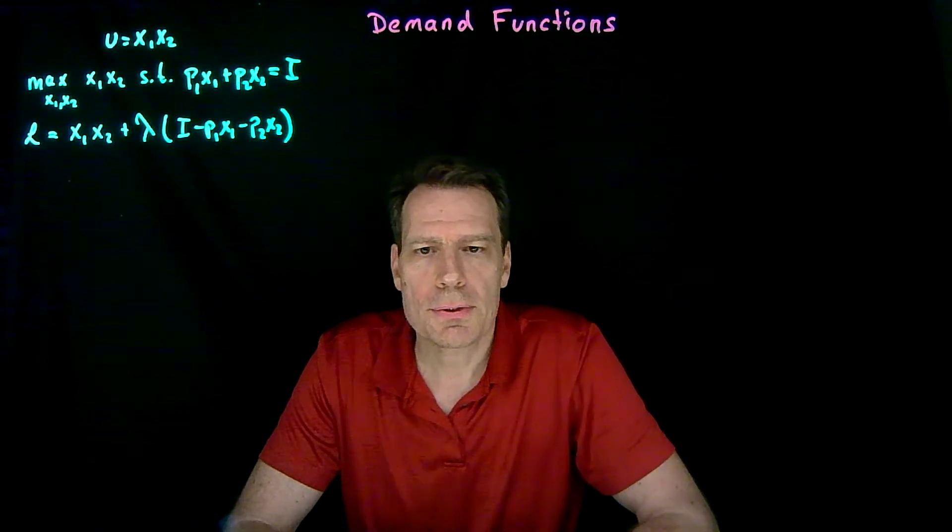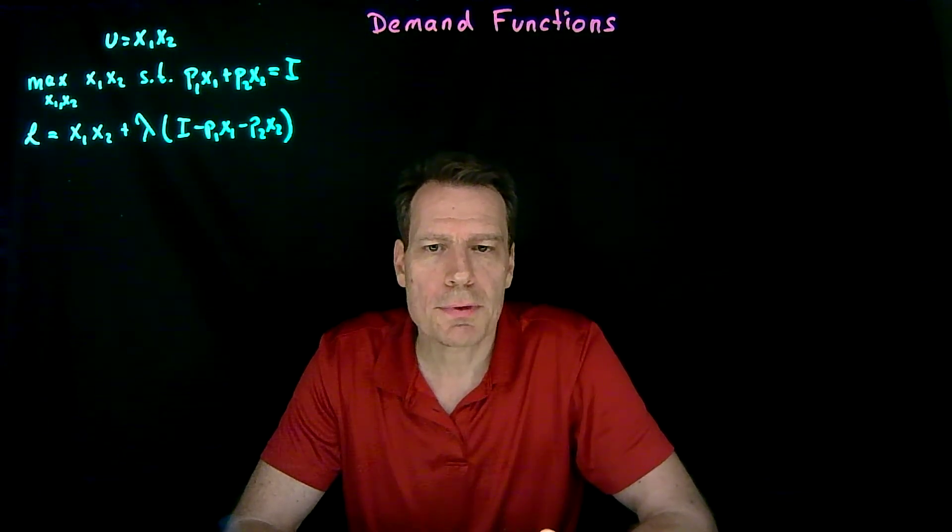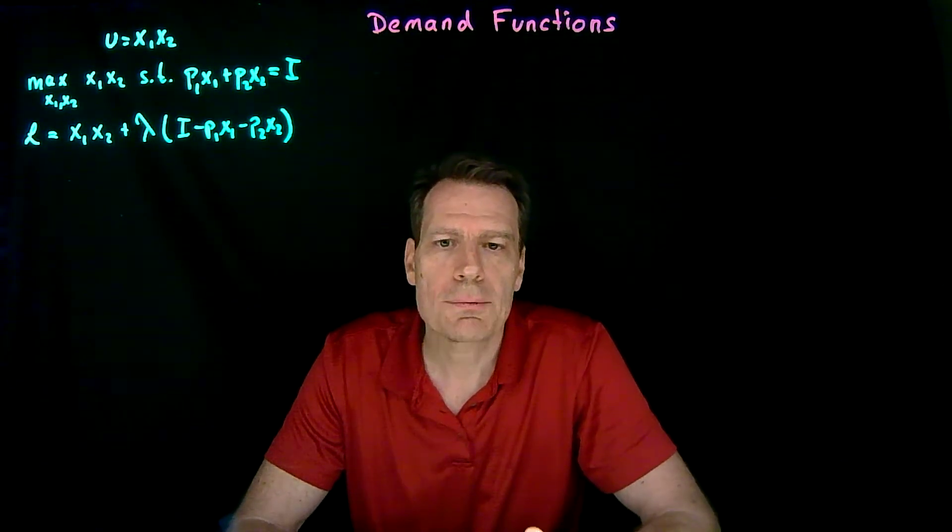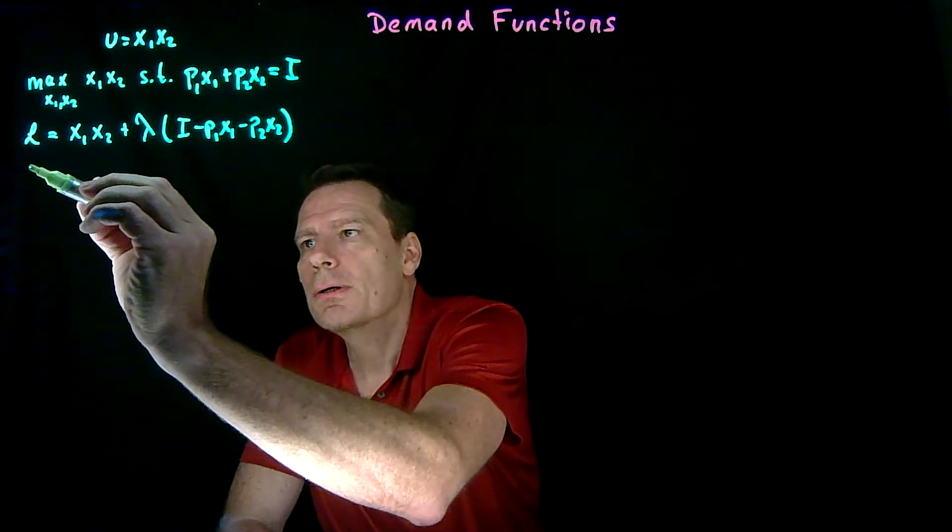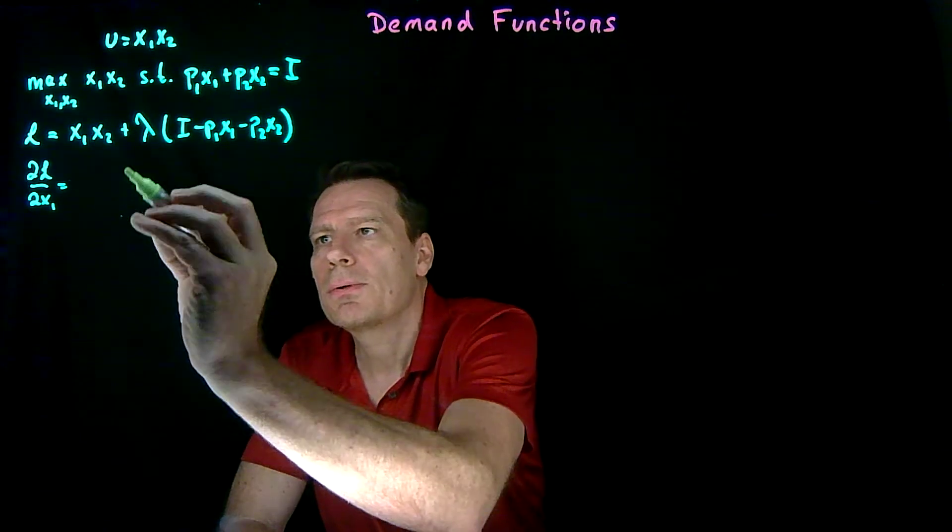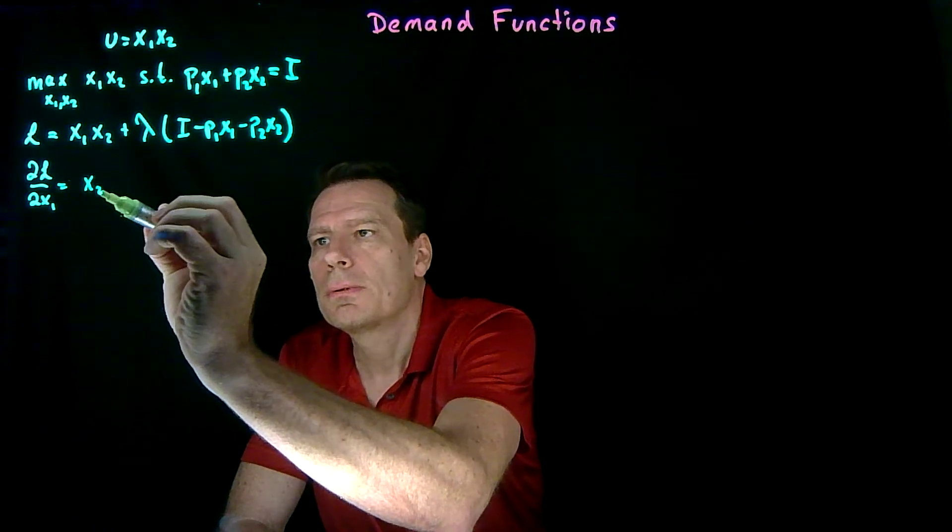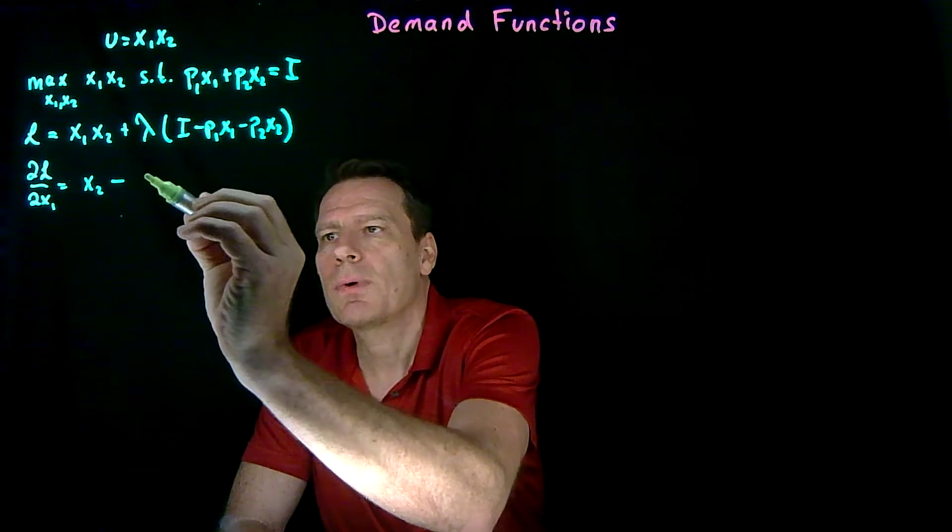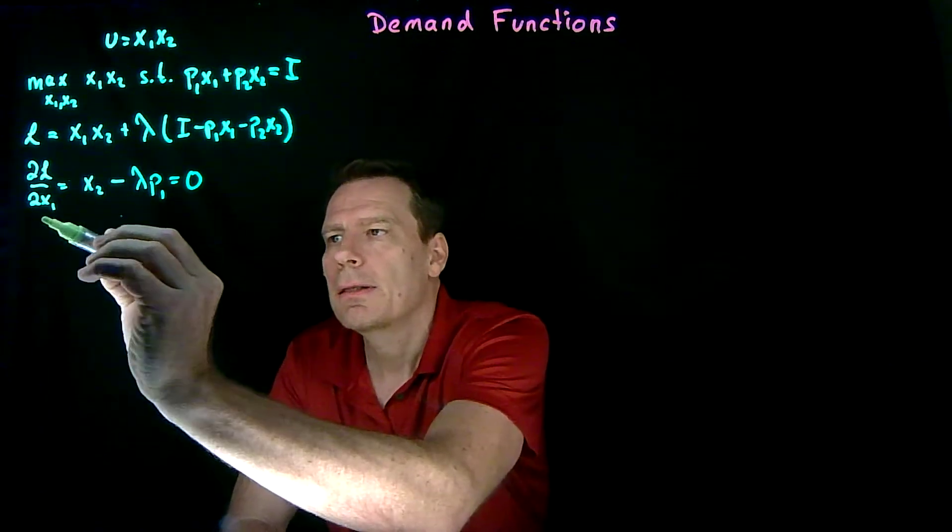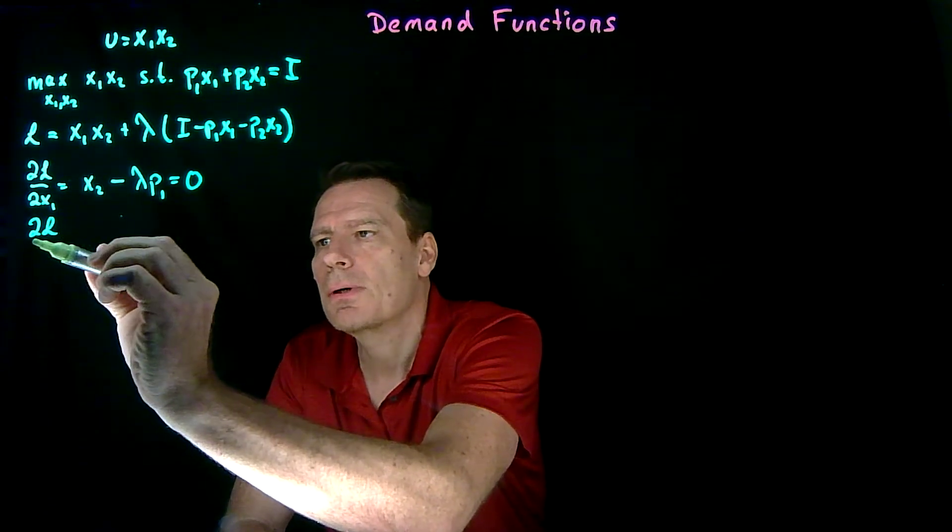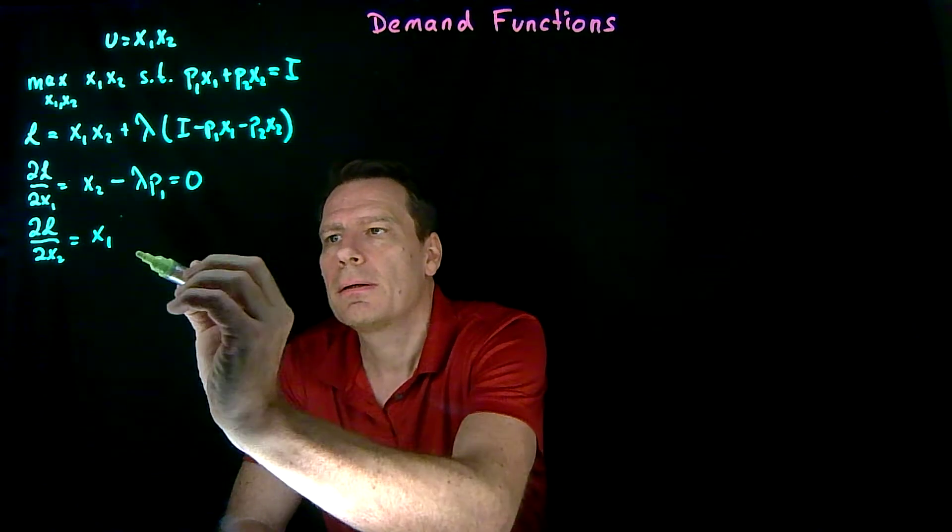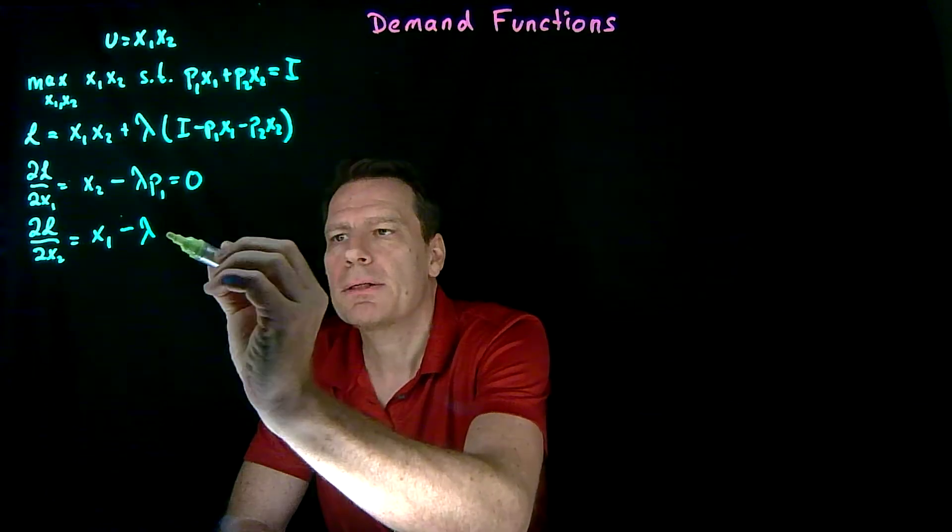We then take the first order conditions, which are the partial derivatives of the Lagrangian with respect to the things we're choosing, x1 and x2, and with respect to lambda. So the partial of the Lagrangian with respect to x1 is equal to x2 minus lambda times p1, and we set that equal to 0.